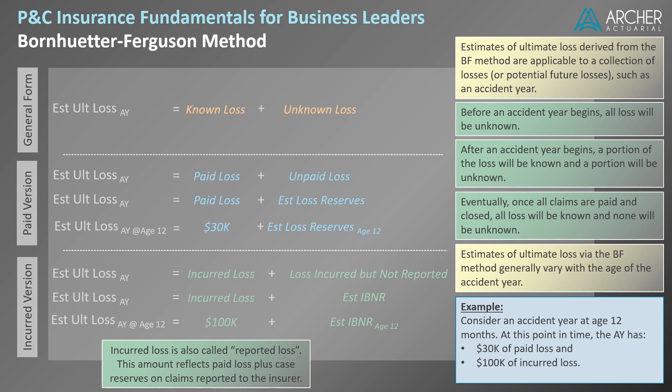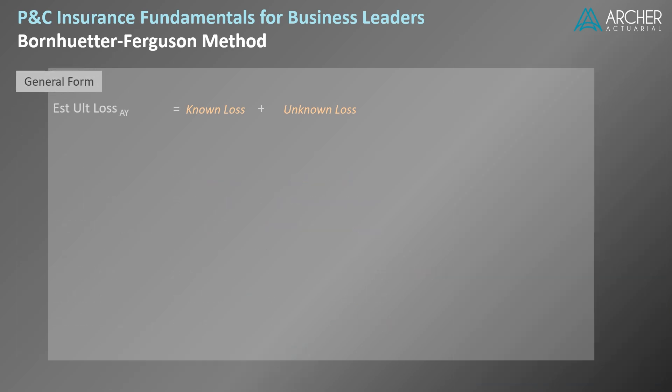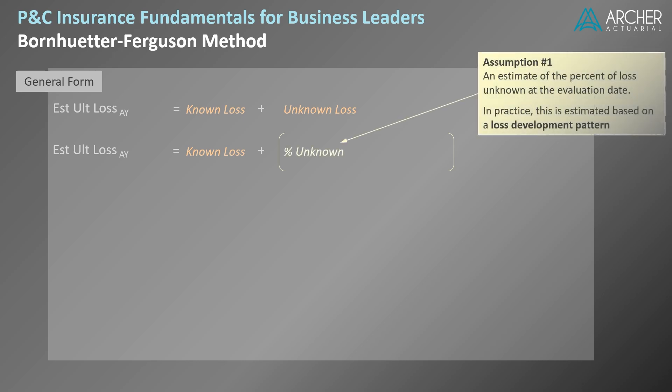Let's spend a little more time talking about the second term in the BF equation. The BF method produces an estimate of ultimate loss comprising known loss and unknown loss. In this method, the unknown portion of the loss is calculated based on just two assumptions. The first assumption is an estimate of the percent of loss unknown at the evaluation date. In practice, this percentage is obtained from an actuarially selected loss development pattern. If you're not familiar with loss development patterns, be sure to check out my video on that topic.